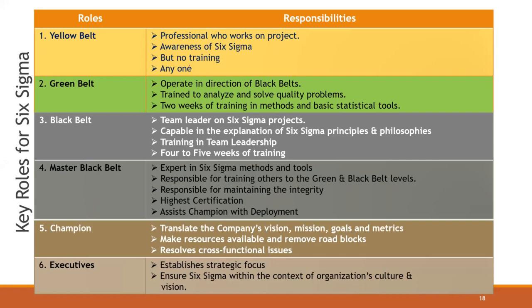The key roles of Six Sigma include Yellow Belt, Green Belt, Black Belt, Master Black Belt, Champion, and Executives. Six Sigma is a detailed and disciplined methodology for improving processes in many aspects of business management, boosting leadership skills, saving time, and promoting cost efficiency. The Yellow Belt certification signifies understanding of basic metrics and improvement methods for Six Sigma, plus the ability to integrate these tactics into an organization's production systems. Yellow Belt is a core awareness role with no specific training requirement.